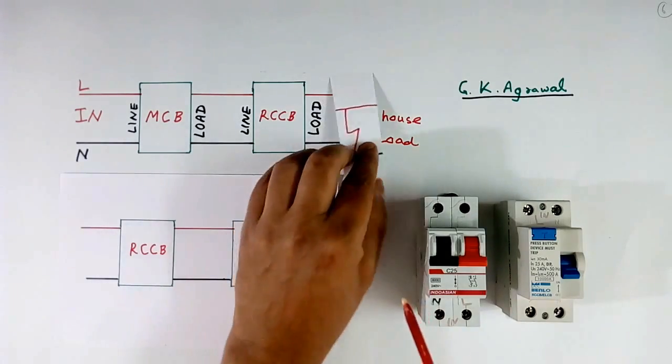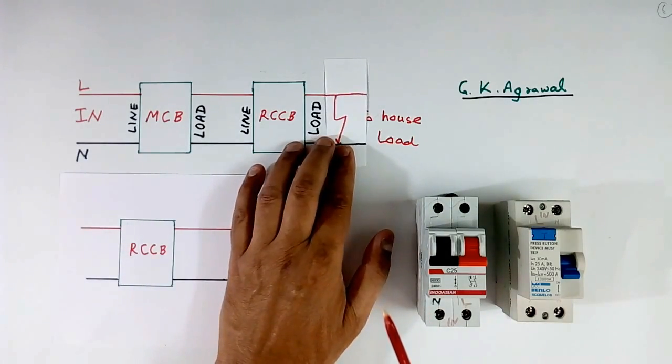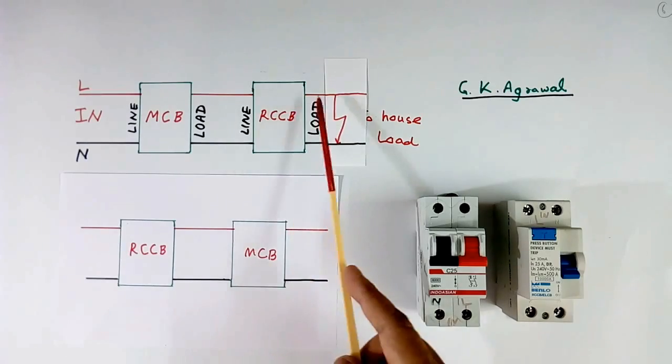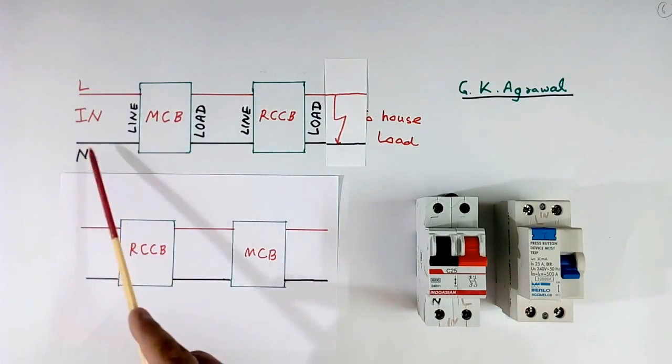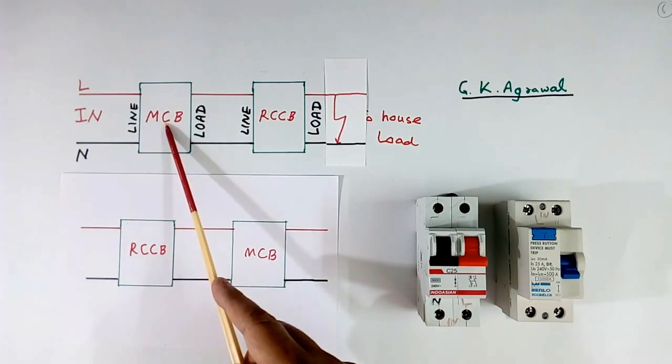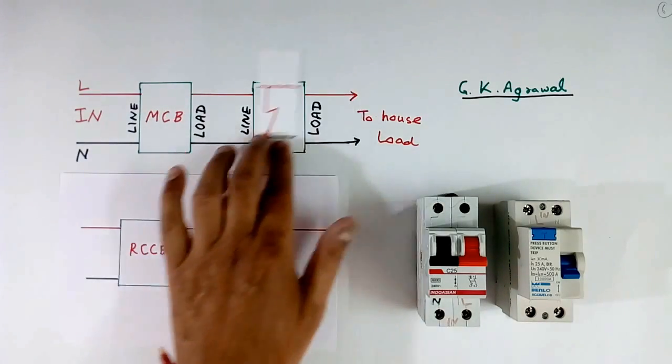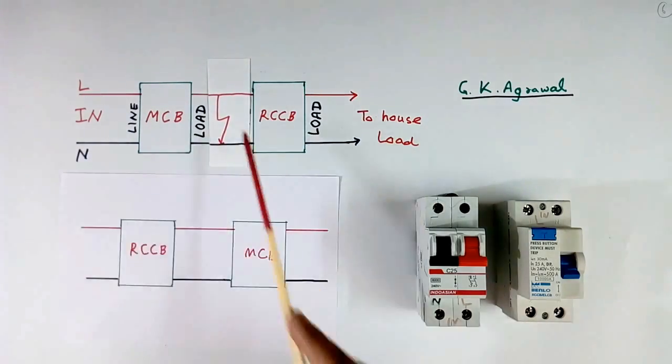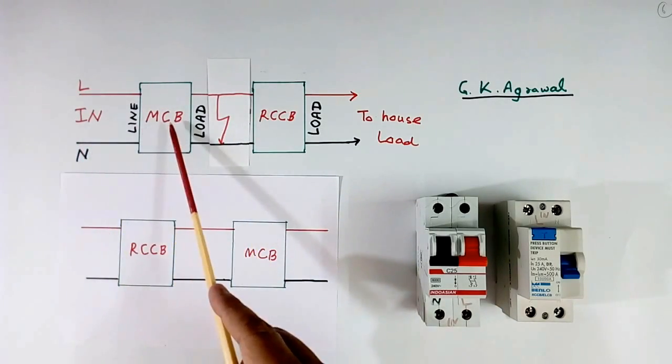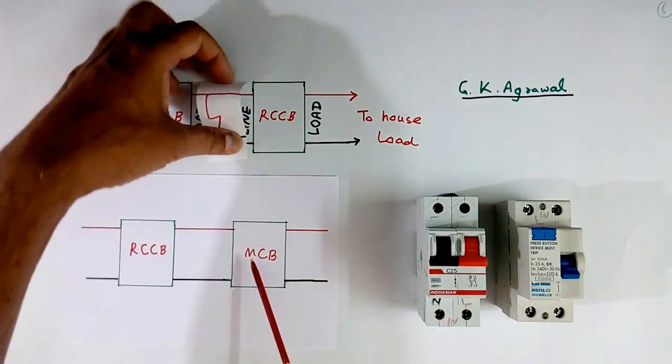Suppose there is a fault here. When fault happens between line and neutral, then this current will flow like this. So this fault current will flow in MCB and it will protect us. It will trip. If short circuit happens here, then also fault current will flow like this and MCB will trip.